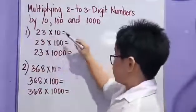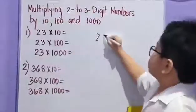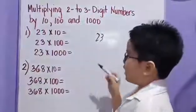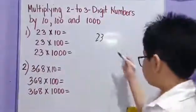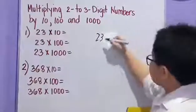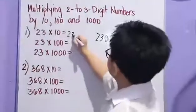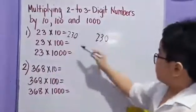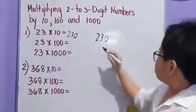Twenty-three times ten equals: one times twenty-three is twenty-three. Do you remember that? Any number multiplied by one, the answer is always the number. Then let's count how many zeros we have — one. Let's add one zero. Then we have two hundred thirty.